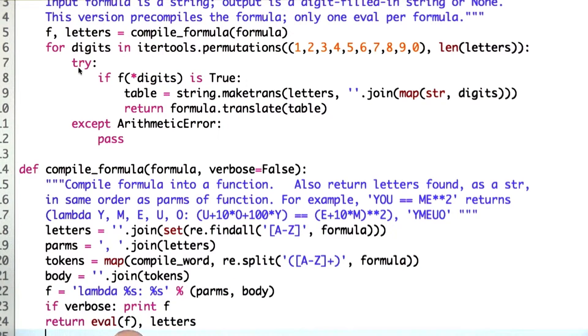Then I just return the evaluation of the function, so that compiles the function, does it only once rather than once per permutation, and I return the letters that I found.